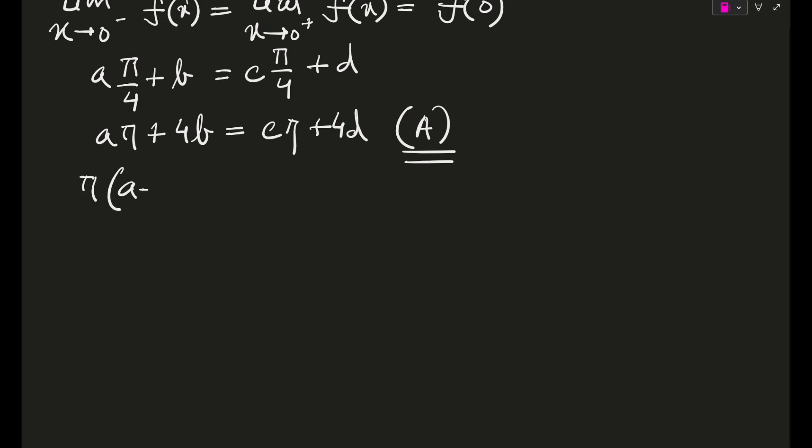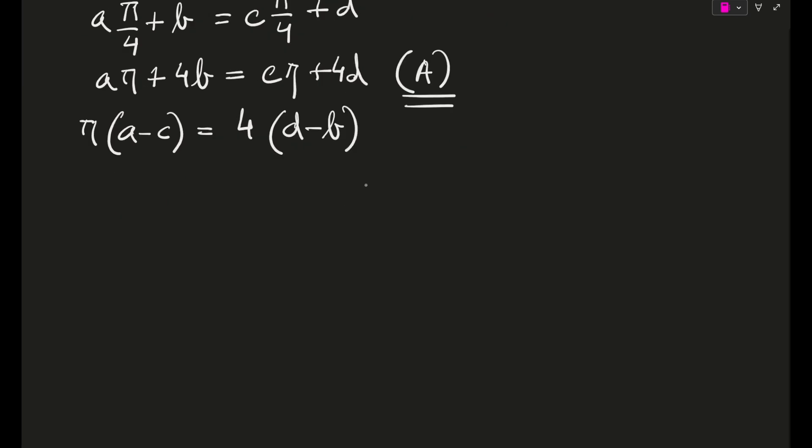And if we do a little bit of switching, then we will get pi times (a minus c) is equal to 4 times (d minus b), which I hope is option number C. So A and C are already correct—two options already correct—but we have to check the rest also.